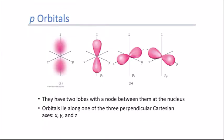Now looking at p orbitals. When the wave function is solved for p orbitals, they have two lobes of electron density — one on each side — with a node at the nucleus where there is no chance of finding the electron. Since L=1, M sub L equals negative 1, 0, and positive 1, giving three orientations: pz along the z-axis, px along the x-axis, and py along the y-axis.